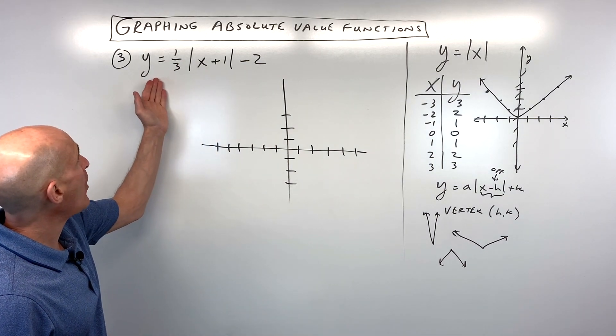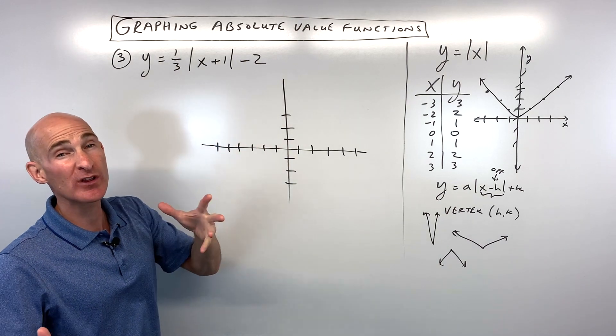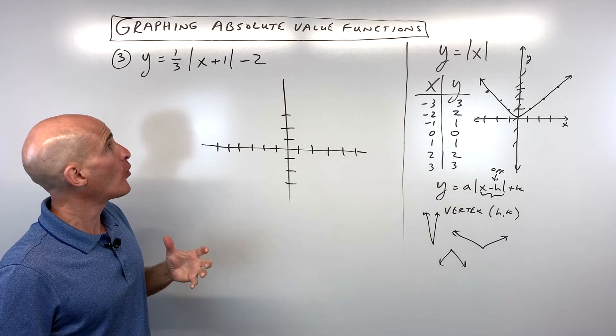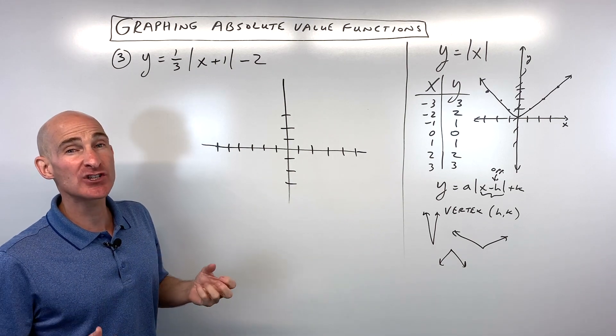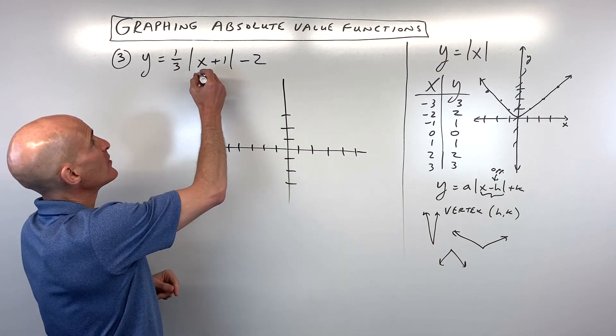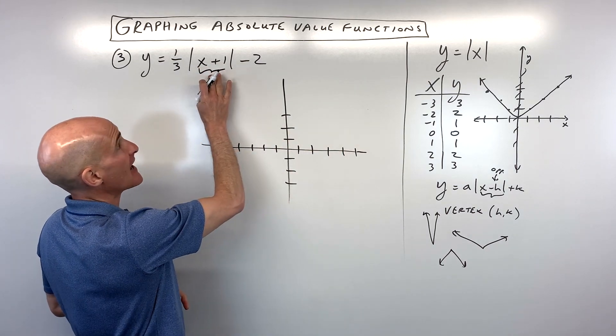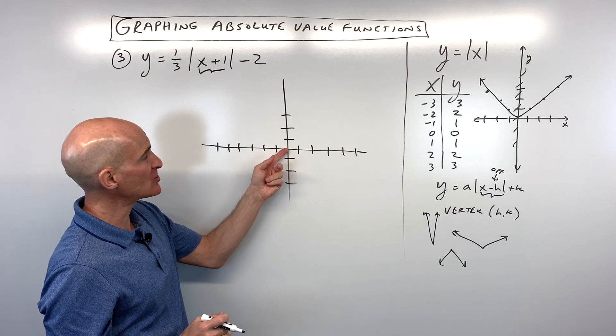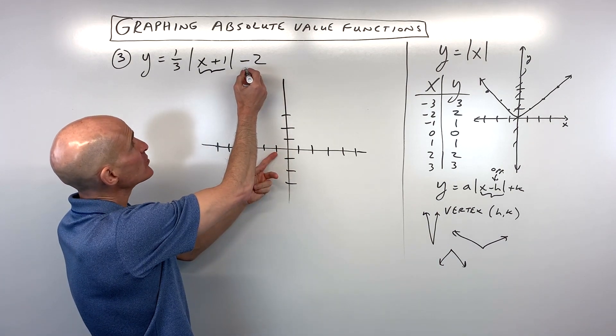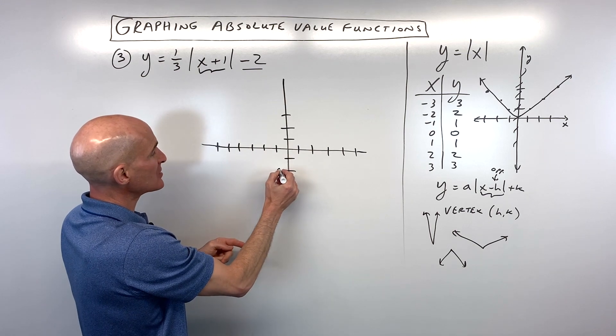But number three, what we have is y equals one third absolute value of x plus one minus two. So what do you think for this one? Where's the vertex? Or you can think about it as, what's the transformation? Where's the graph being shifted or stretched? Well, we can see this one that's grouped with the x. We talked about how that shifts it in the x direction, but it has the opposite effect. So plus one is actually shifting at left one. This one here has the same effect. It's going to go minus two. That's down two. That's going to put us right there. That's our vertex.